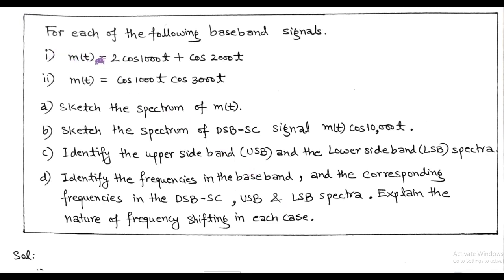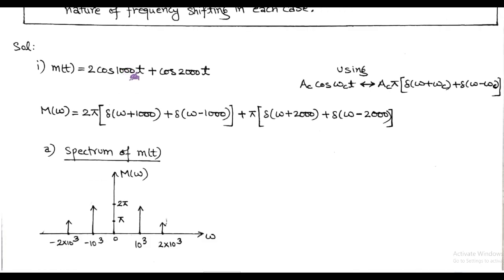First, we consider modulating signal MT equals 2cos(1000t) plus cos(2000t). In order to sketch the spectrum of this modulating signal, we have to convert it into the frequency domain using Fourier transforms. We use: A·cos(ωC·t) equals A·π within bracket [δ(ω + ωC) plus δ(ω − ωC)]. That is the Fourier transform formula we apply.